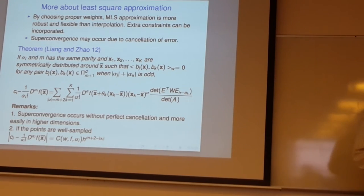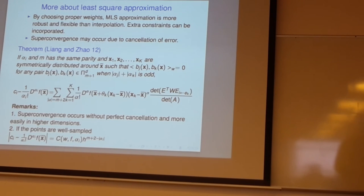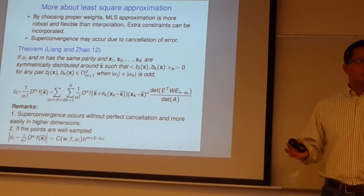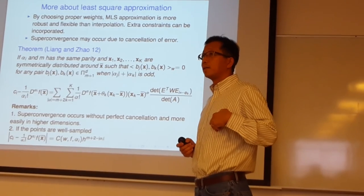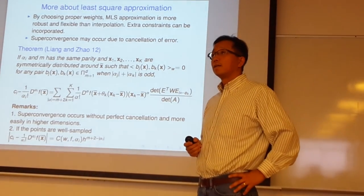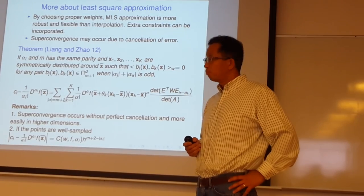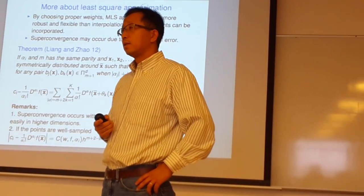Question: How does this relate to ENO or essentially non-oscillatory schemes where you select the stencil adaptively? That's a non-linear scheme. Here I'm not dealing with non-smooth functions — the key point is that because it's a local finite difference, you cannot impose some global structure like positive definiteness. But by using k-nearest neighbors, you already have some scaling adaptivity: denser point clouds give more accurate results, while sparser regions give less accuracy.